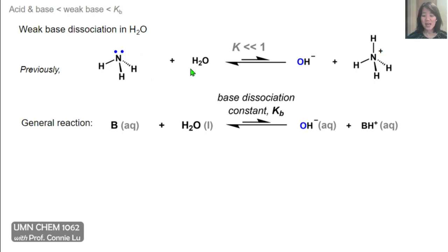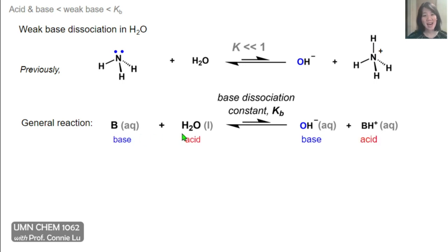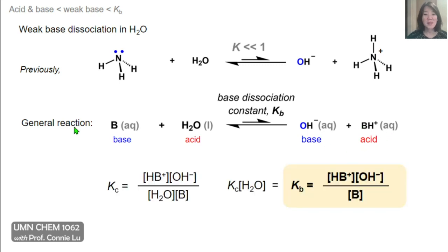Here's ammonia again reacting with water, and this equilibrium favors the reactants. Generally, we can rewrite this as a weak base represented by B in water dissociating to form hydroxide and the conjugate acid of the weak base. And now we're going to describe a new equilibrium constant called Kb, or the base dissociation constant. In this reaction, because we start with the weak base, water now acts as an acid, and we also form the conjugate base of water, hydroxide, and the conjugate acid of the weak base. The Kc expression for this reaction is shown here.